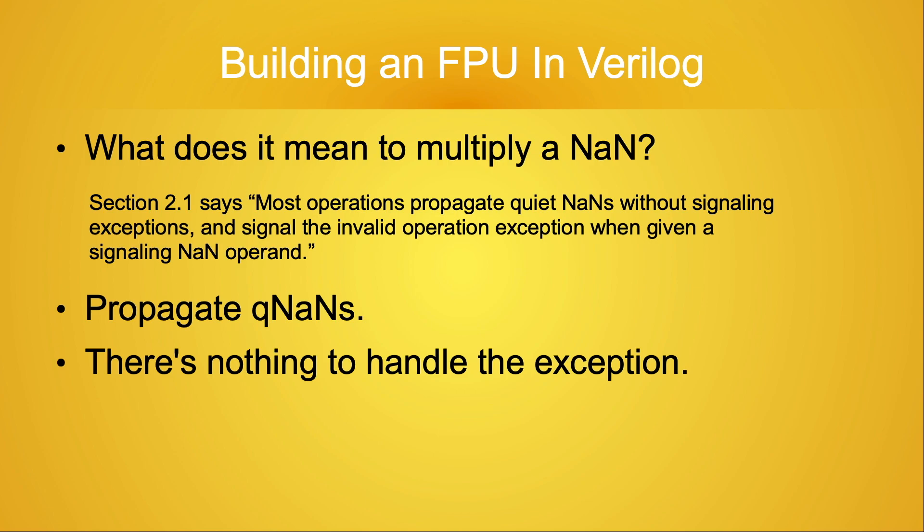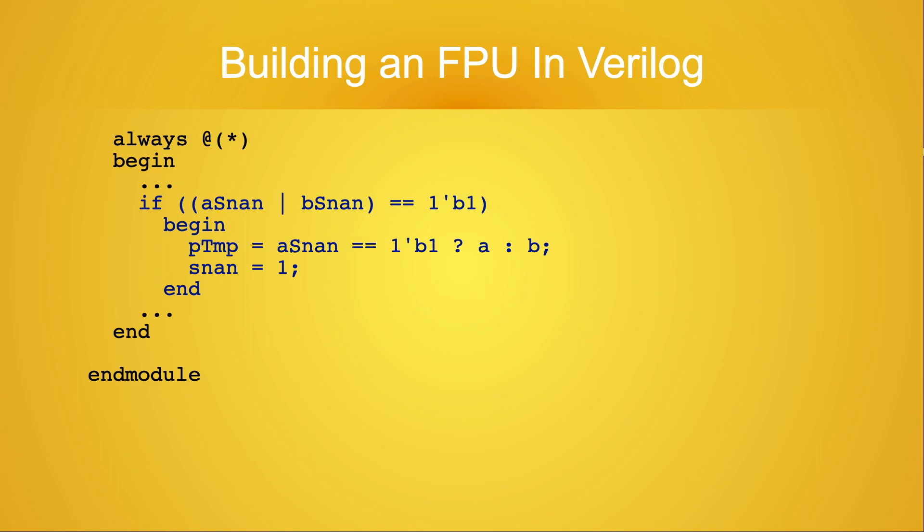I'm developing the multiply module as a standalone piece of code. Eventually, someone could incorporate the module into an actual FPU or CPU, and then there would be some infrastructure for handling the exception. Until that happens, I'm going to treat signaling NANs the same way quiet NANs are handled. I'm going to make the module propagate the sNaN.